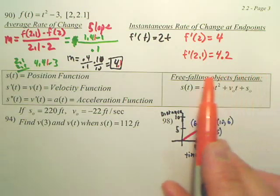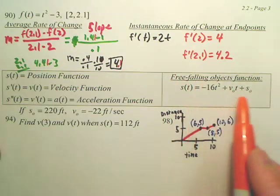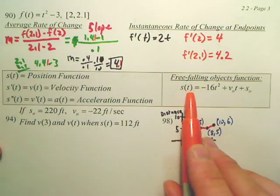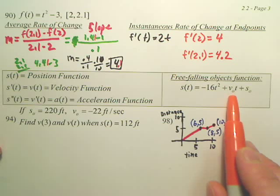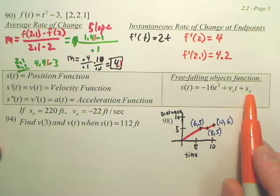This is also a common formula for a falling object. Again, s of t means position. v little zero means initial velocity, or velocity at zero. s sub zero means position at zero, or initial position.